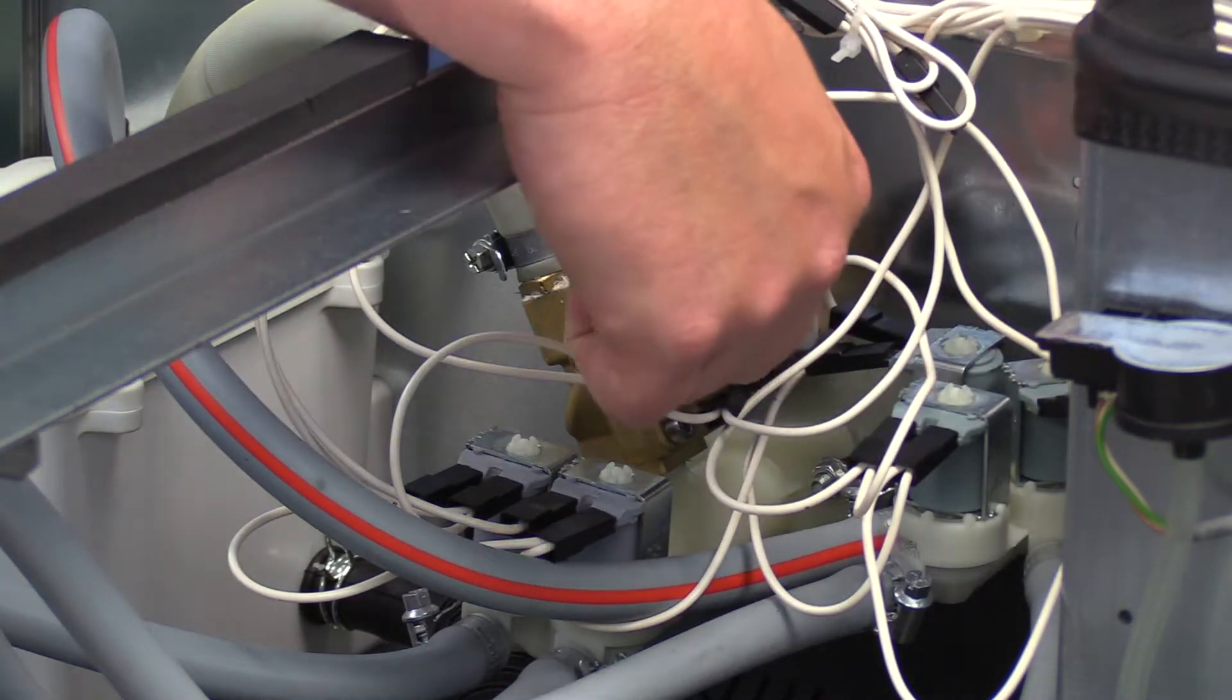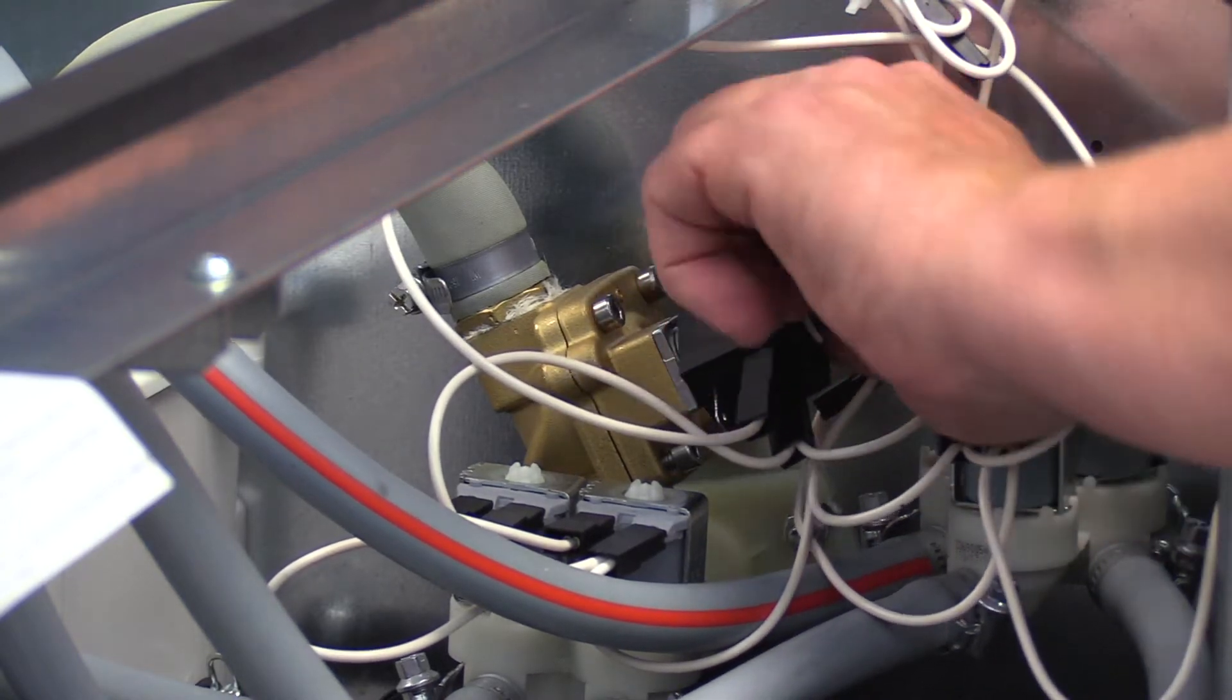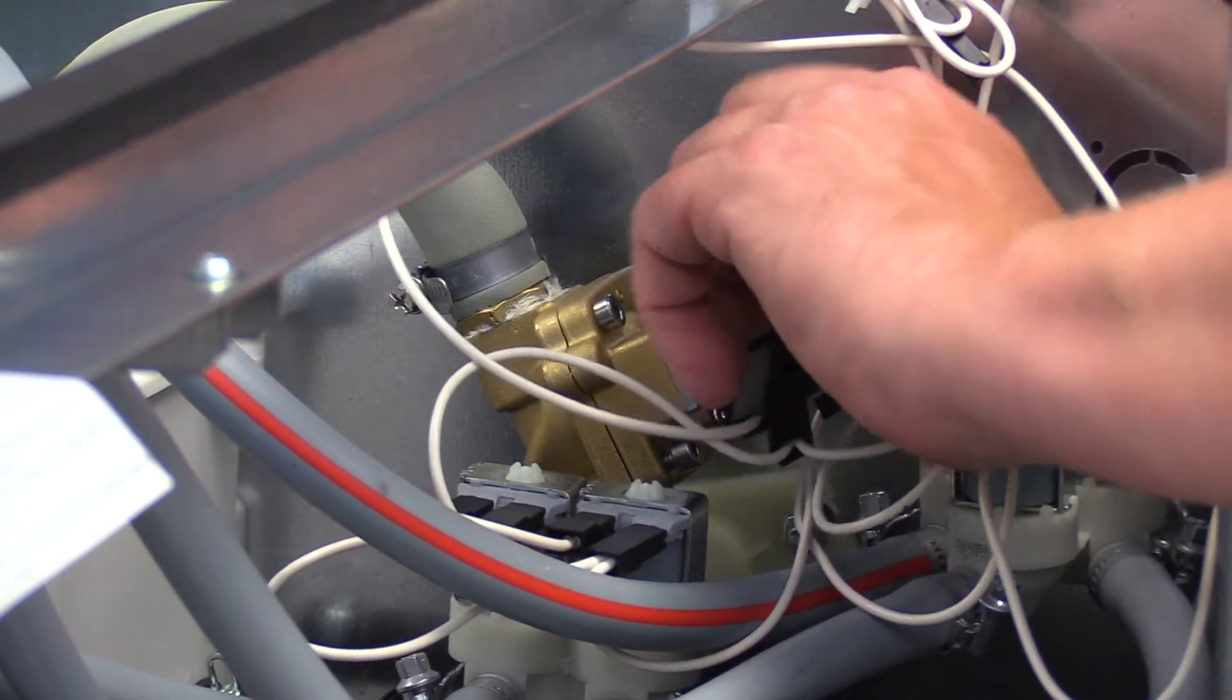Remove the nut that holds the valve coil to the valve. Slide the coil off the coil stem and set aside.